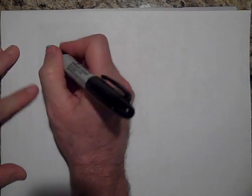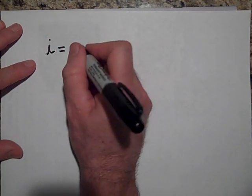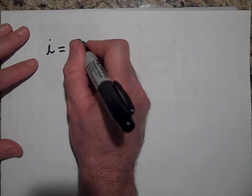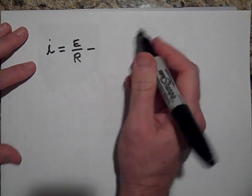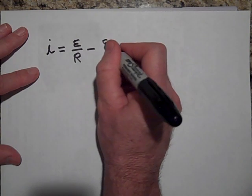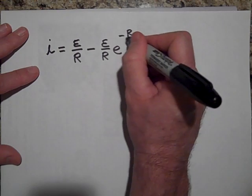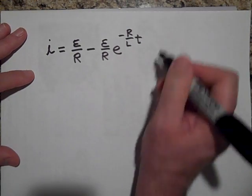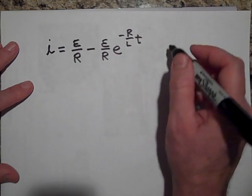I is going to be equal to some final I minus some final I times e to the negative R over LT. So this is a growth graph.